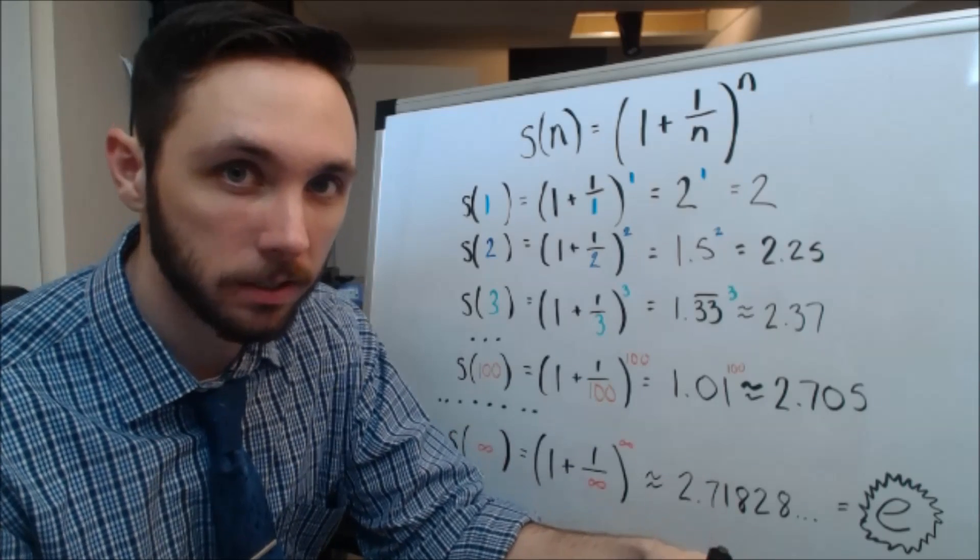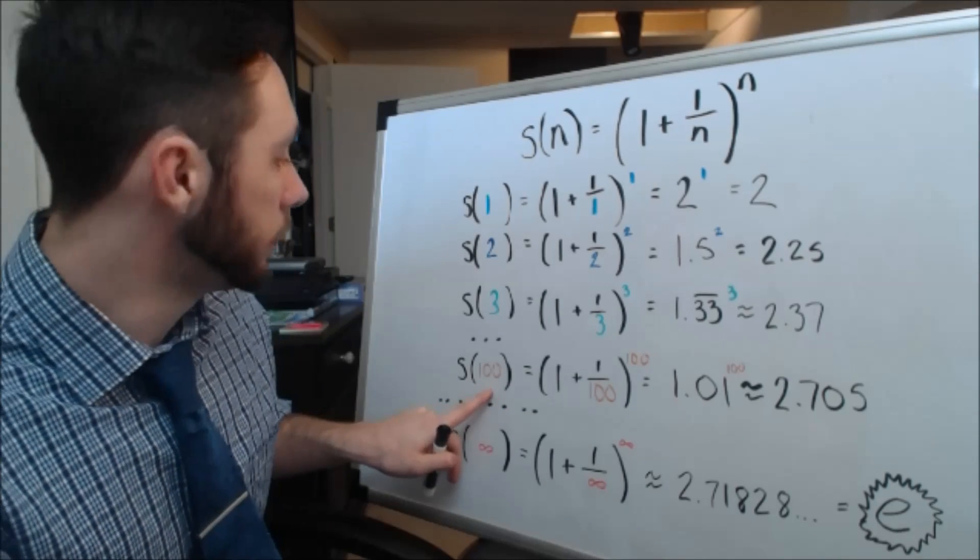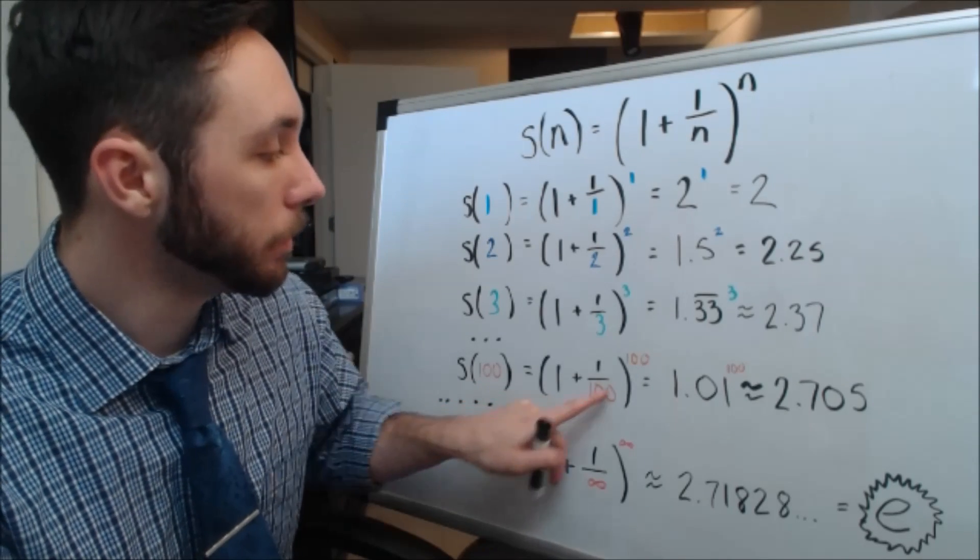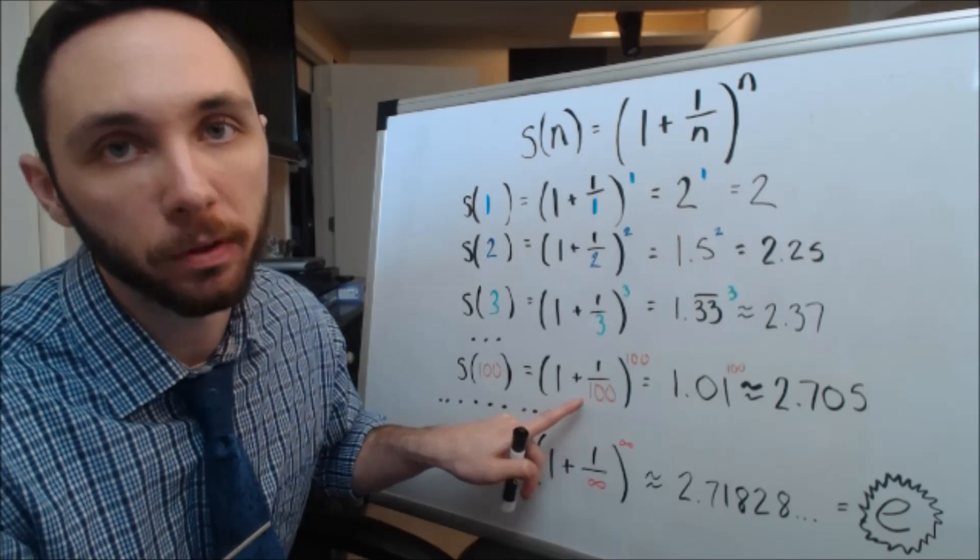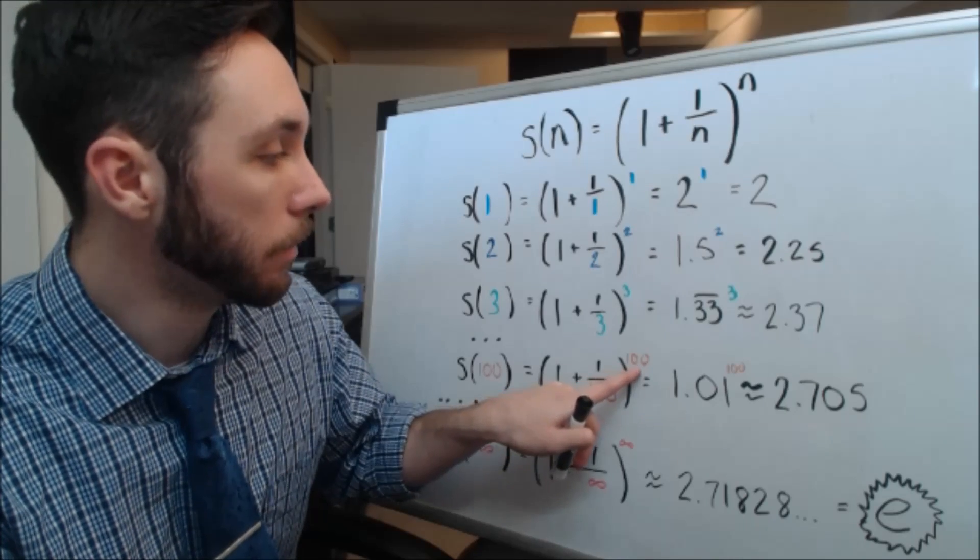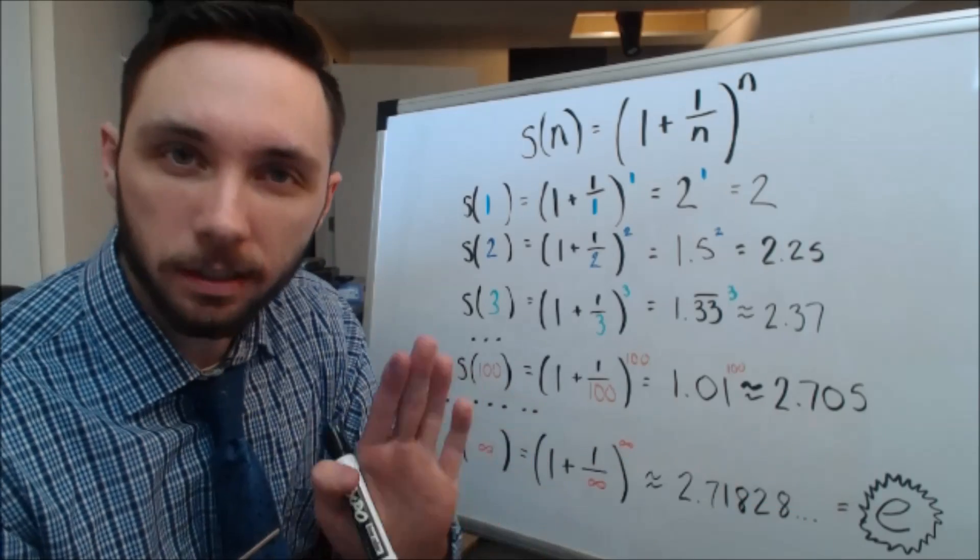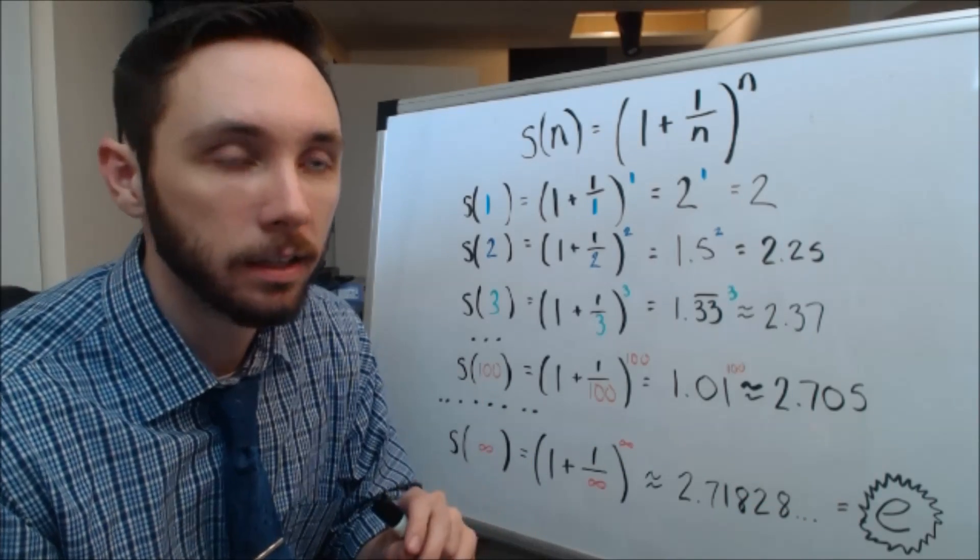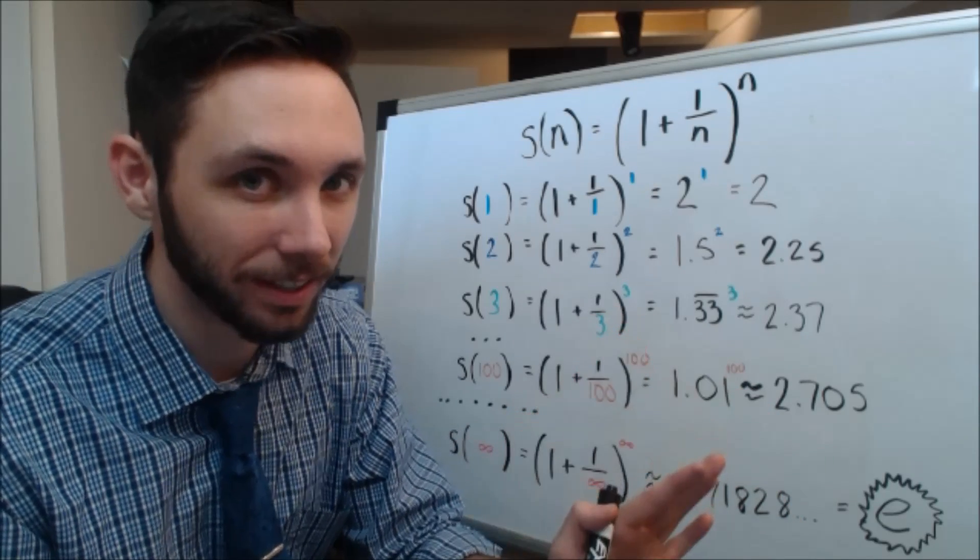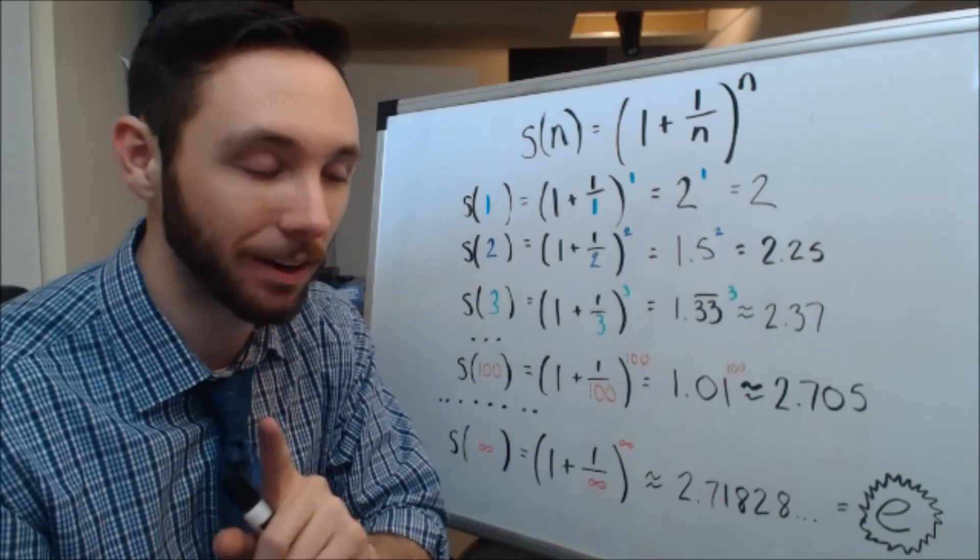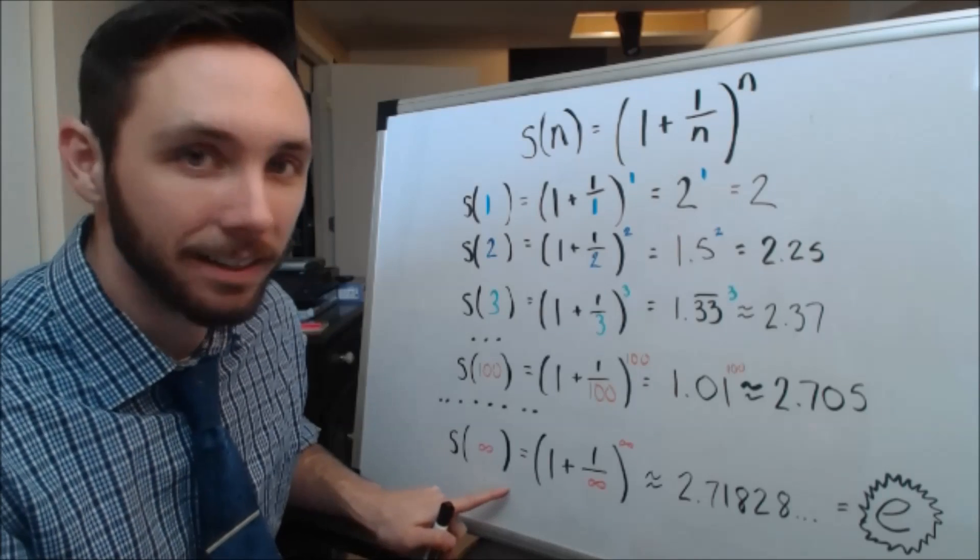Let's jump a few steps. Let's go all the way up to 100. S of 100 using this idea. I'm going to replace those n's with 100. I'm going to get 1 plus 1 and 1 hundredths, so that's just 0.01 to the hundredth power, and that's going to be approximately 2.705. Well, okay, that's still not enough. What I want to do is I'm going to plug in, theoretically, the largest number I possibly can. I want to theoretically plug in infinity.